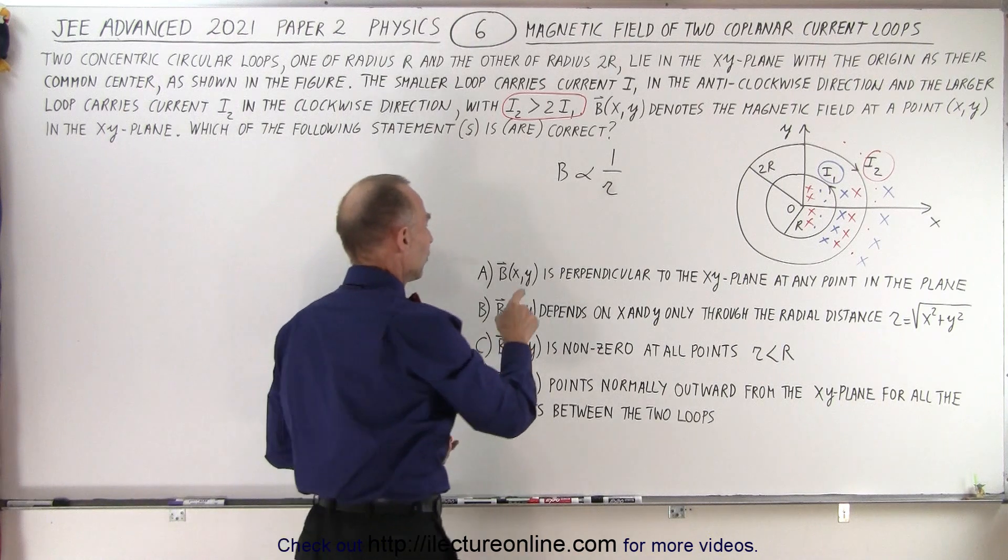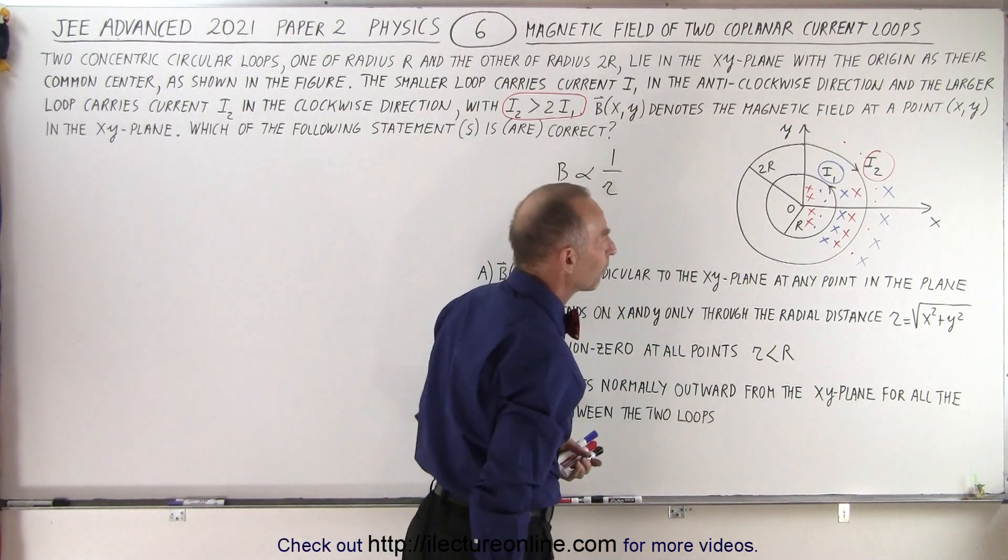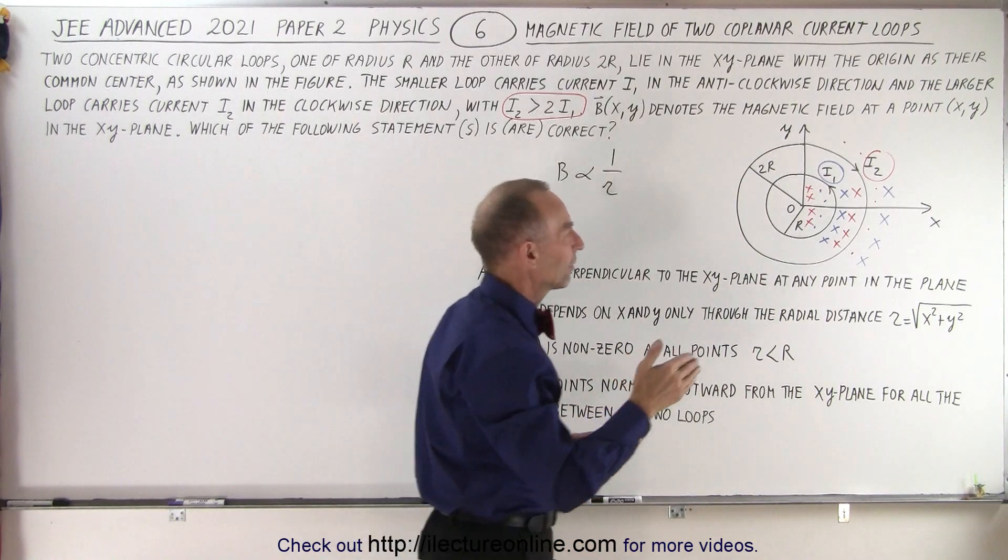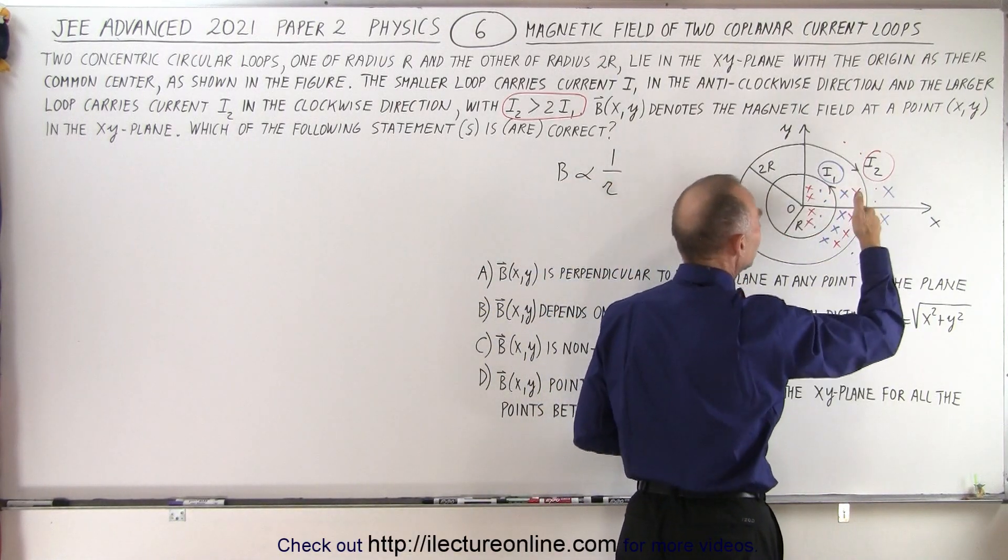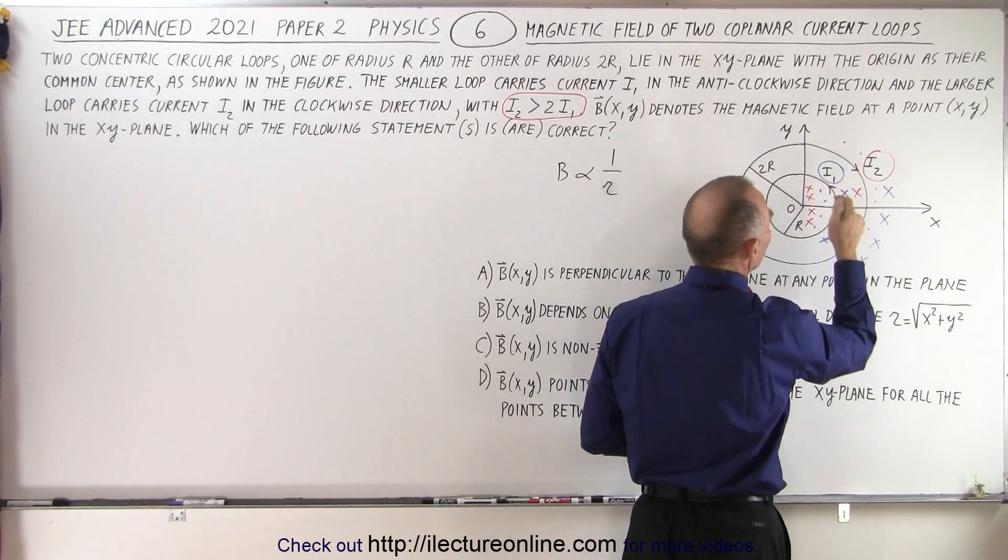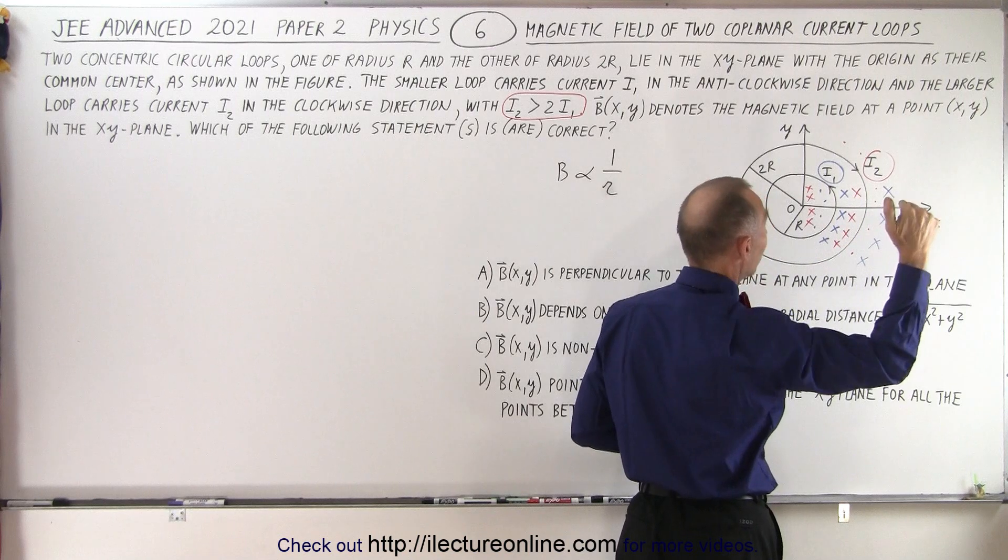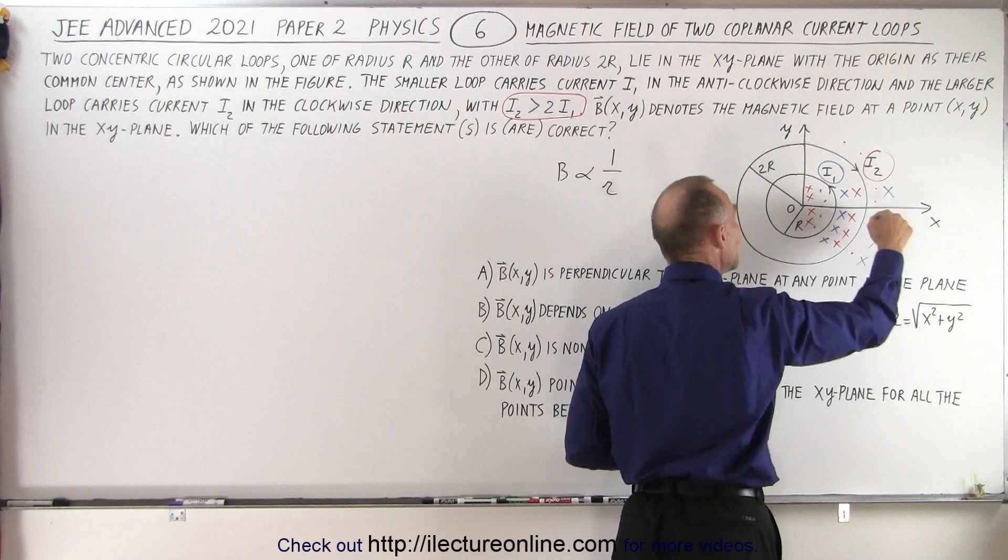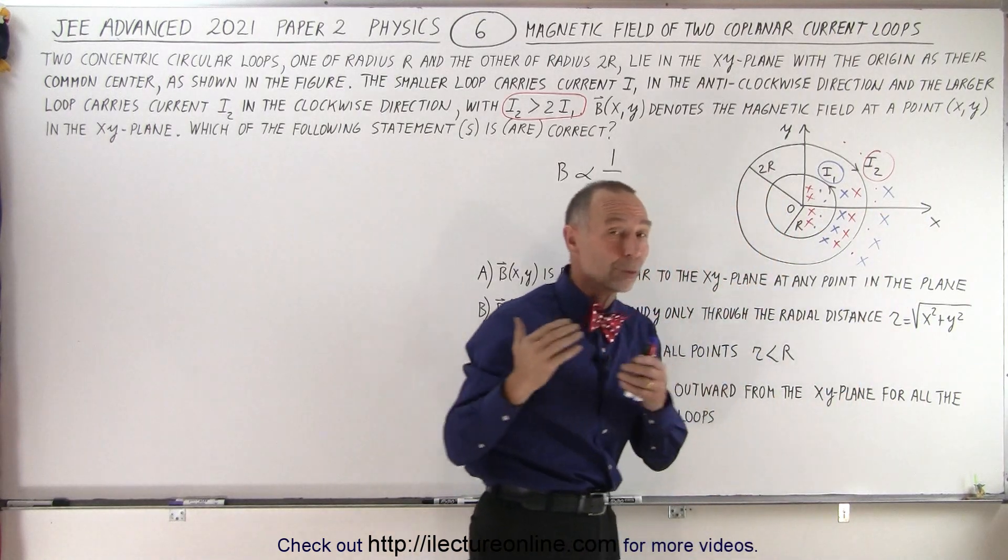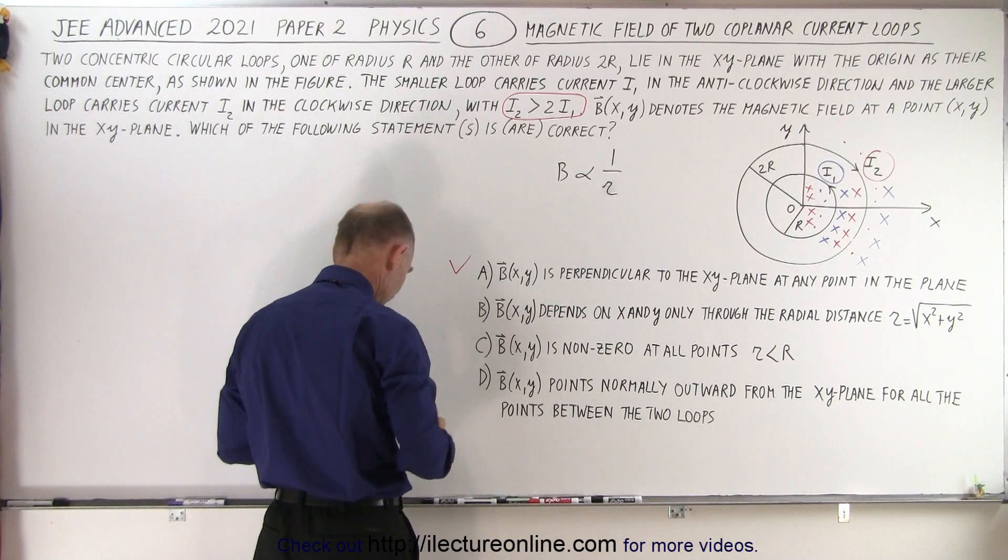So now when we have that information, let's see if we can quickly answer the questions. For A, is the B field perpendicular to the XY plane at any point in the plane? And notice that it will be perpendicular to the plane as it goes through the board, either on the way in or the way out. And then it will curl around. So I think it's a correct statement to say that in the plane everywhere, due to these two current loops, we'll have B field going in or out of the board perpendicular to the board. So A is definitely a correct statement.